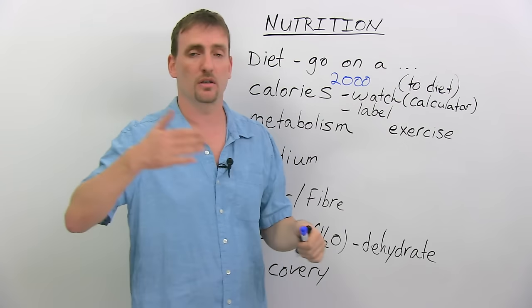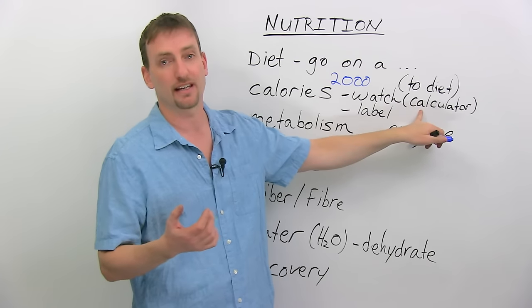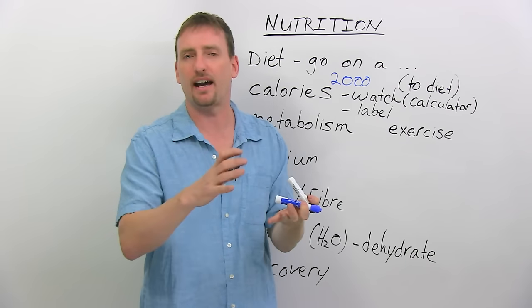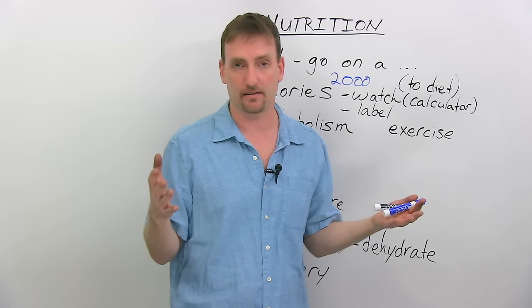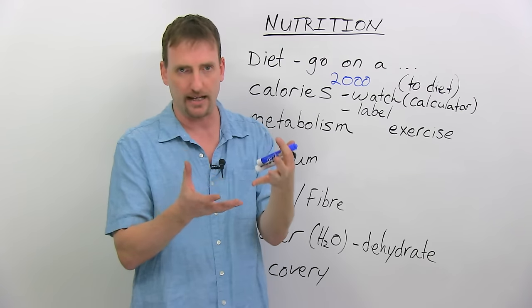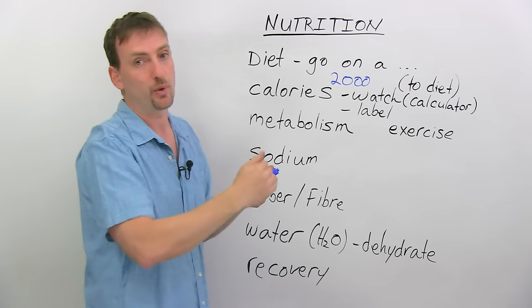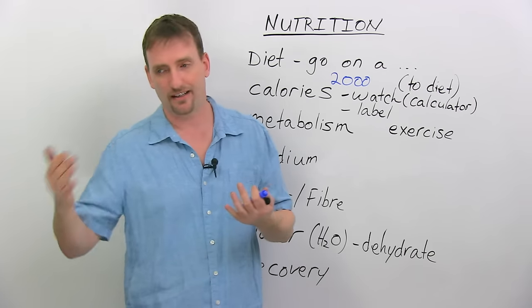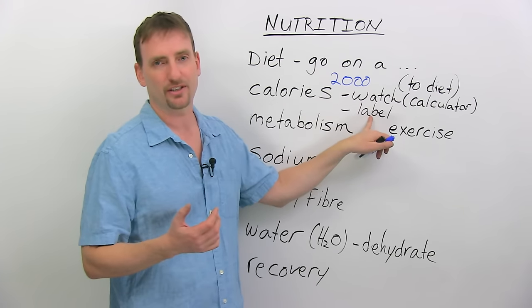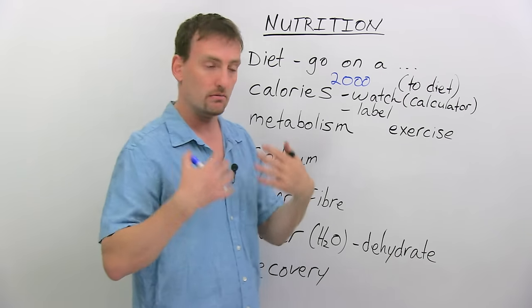You should always watch your calorie count. Watch the calories you're taking in, basically it means be aware of. Some people use a calorie calculator. A calorie calculator means every time they eat something, they punch in the number of calories in that meal, and then at the end of the day, they see how many calories they ate or drank. Make sure that you pay attention to food labels. Every time you go to the supermarket, every time you buy a packaged item of food, there's going to be on the side or somewhere on the package a label that tells you the components.